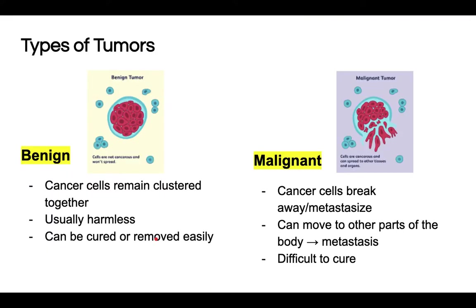Cancer cells can form tumors — masses or groups of cells. There are two kinds of tumors. Benign tumors do not move; they are immobile and usually form at one body part, sticking together and staying localized. They can be treated by targeted therapy such as chemotherapy or surgery to remove the tumor. Generally, that is it — the tumor is harmless in the sense that it doesn't damage other body parts, and it is easier to treat.